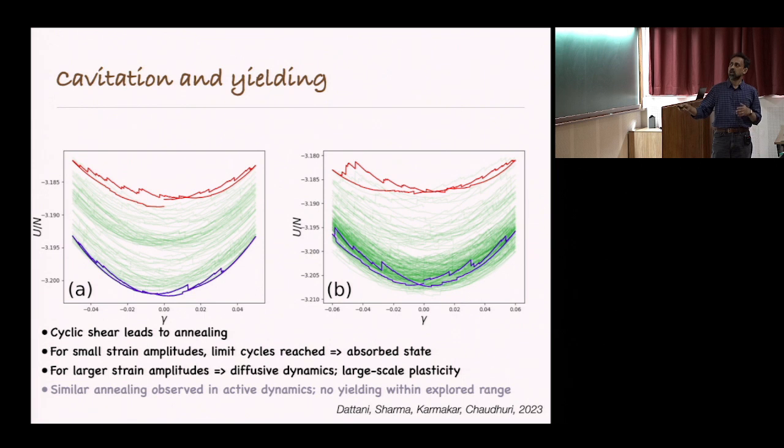Essentially the system is going into some absorbed state. As you increase the shear amplitude, this goes into large scale plasticity. There is also yielding happening as we increase the strain amplitude, but there are also cavitated states which are absorbed states. You are finding new local minima in the landscape which has spatial inhomogeneities.